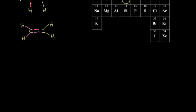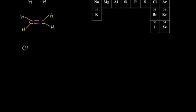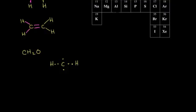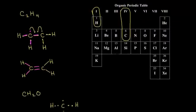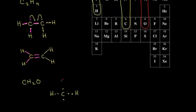Let's draw the dot structure for the molecular formula CH2O. Once again, I start with carbon in the center — four valence electrons — and two hydrogens, one over here on the left and another over here on the right. For oxygen, let's go back to our periodic table: oxygen is in group six, so it has six valence electrons. I'll go ahead and put in the six valence electrons for oxygen — one, two, three, four, five, six.